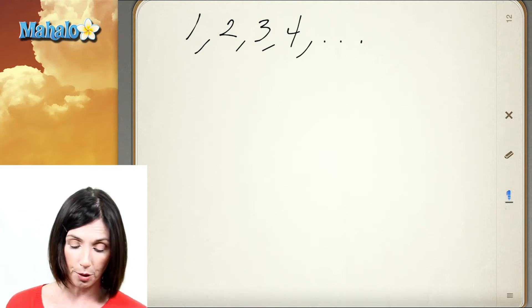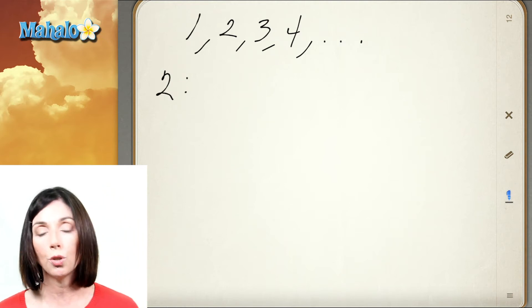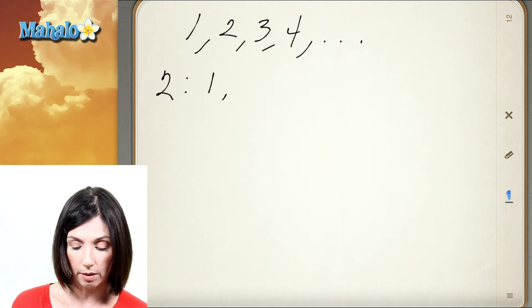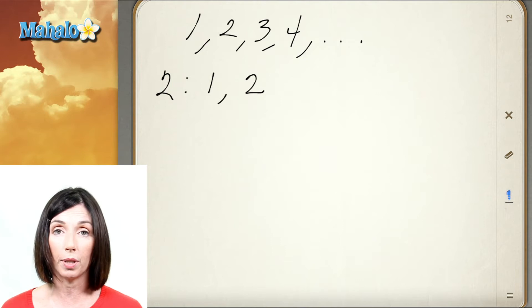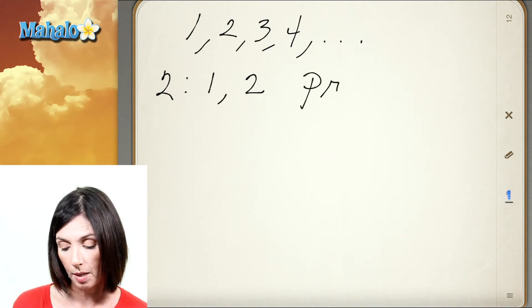So let's go to the number 2. 2 has only two factors, 1 and 2, so 1 and the number itself. That means that 2 is a prime number.